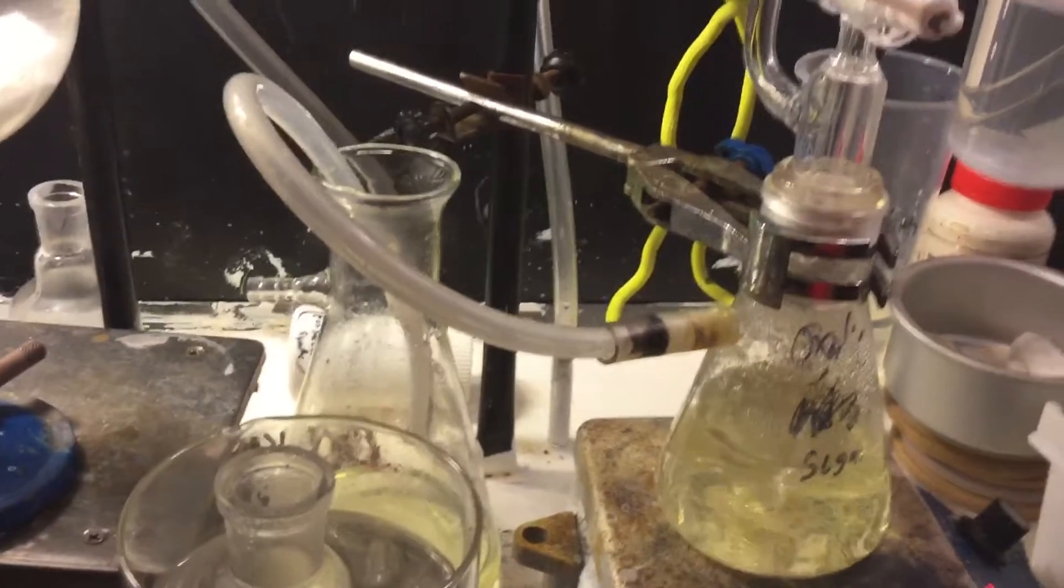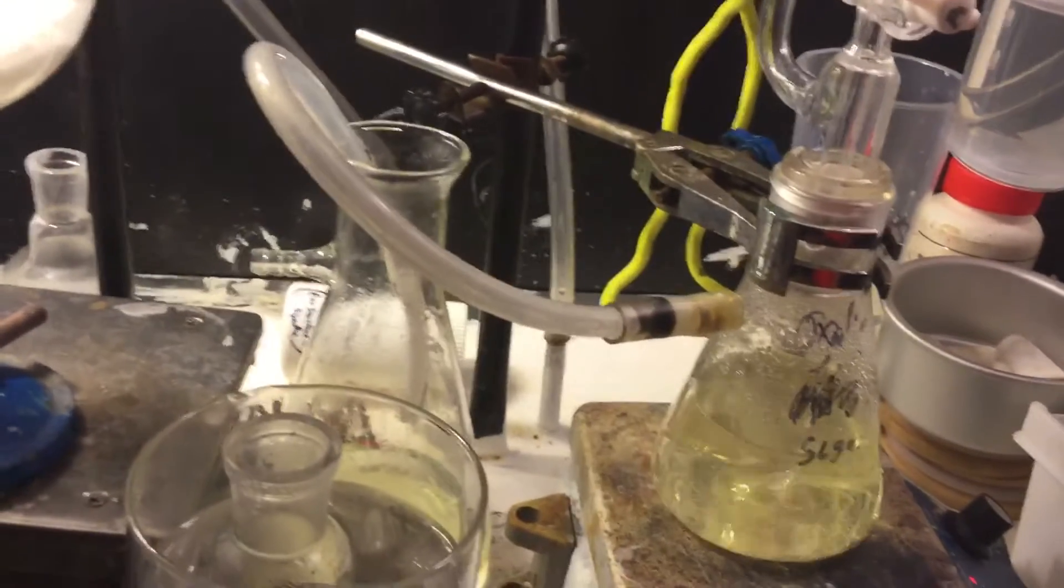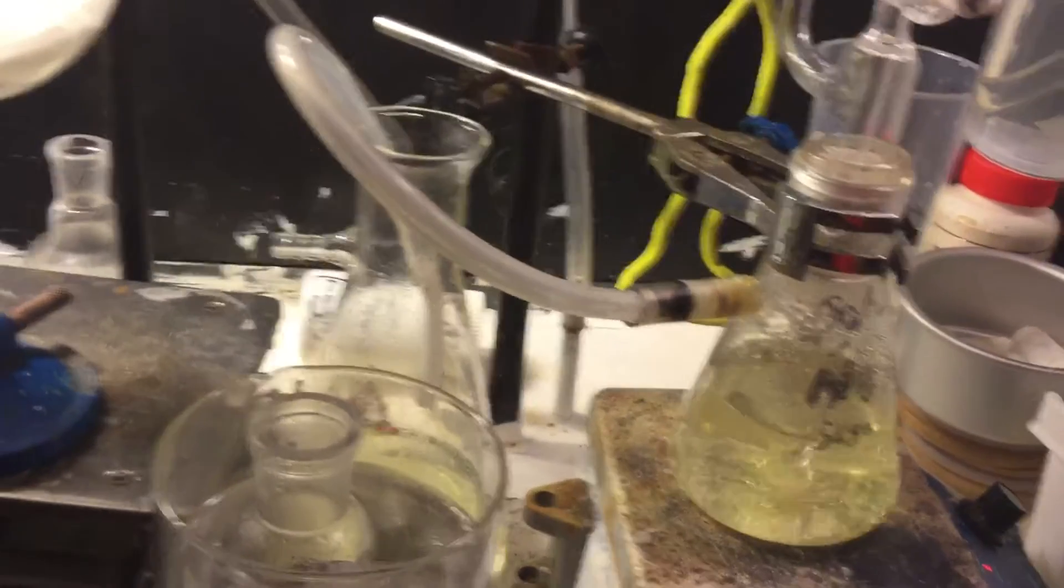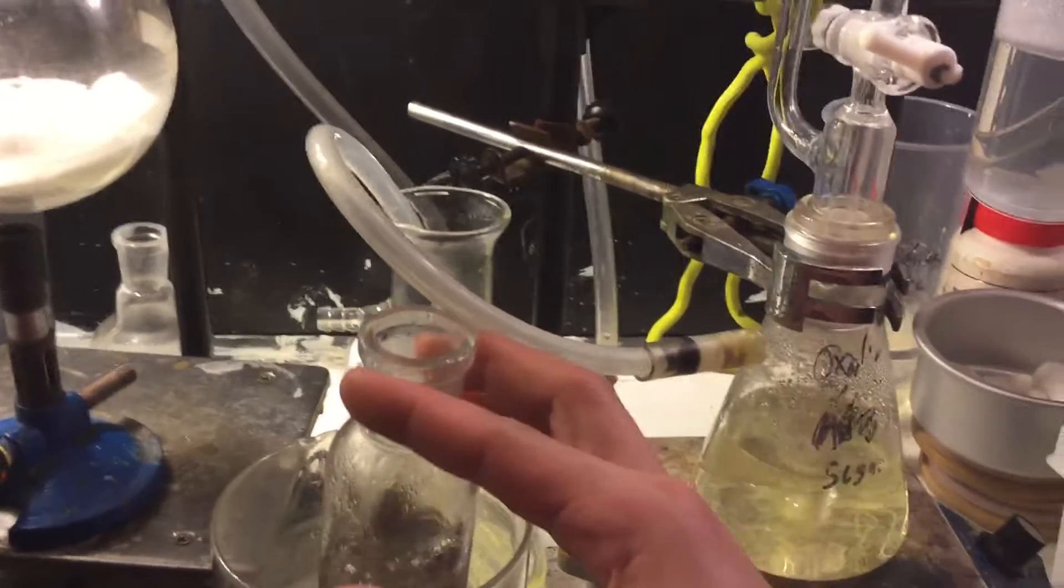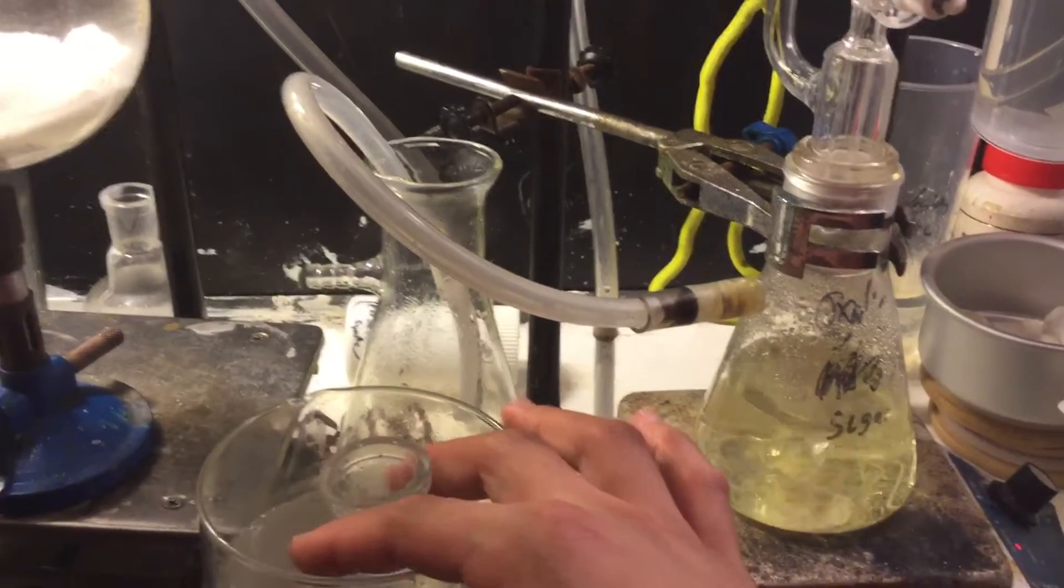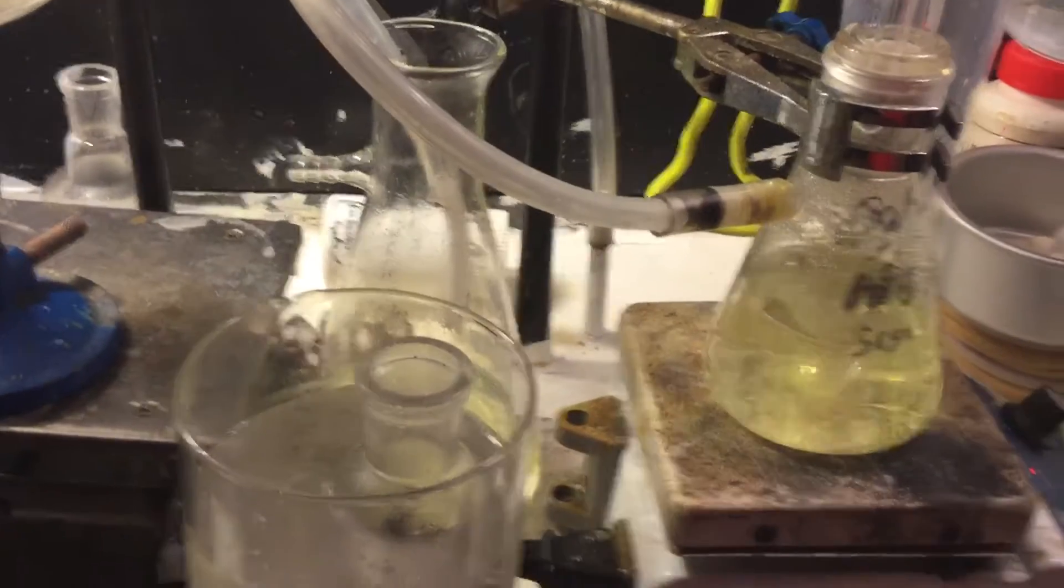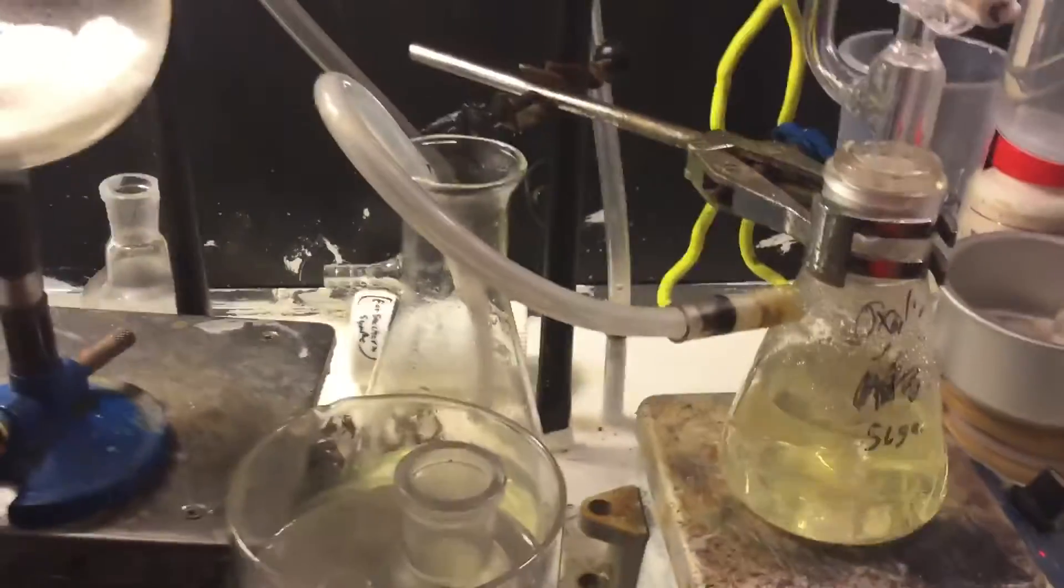To get even just a few grams, you need over 20 liters of chlorine gas, which is just, you know. So I was trying to see if I could dissolve aluminum in methanol with HCl, but probably got some water in that.